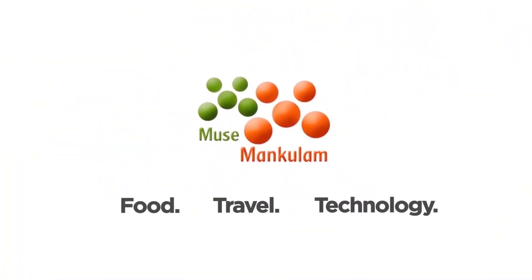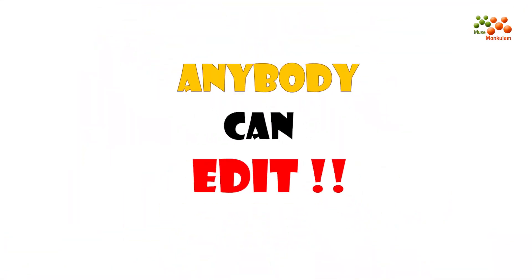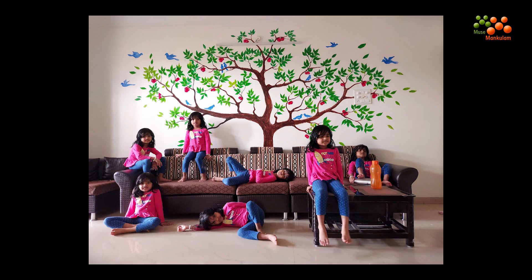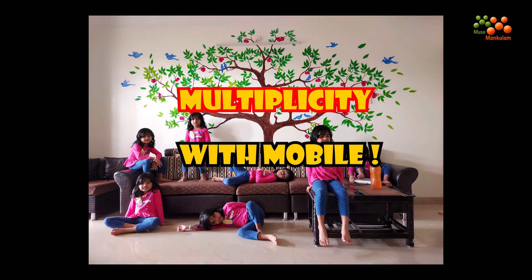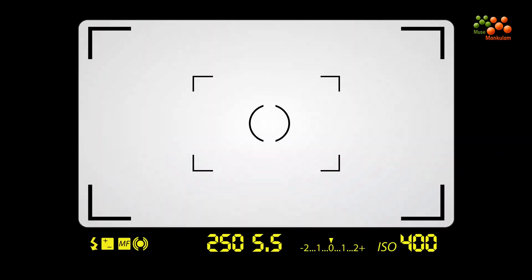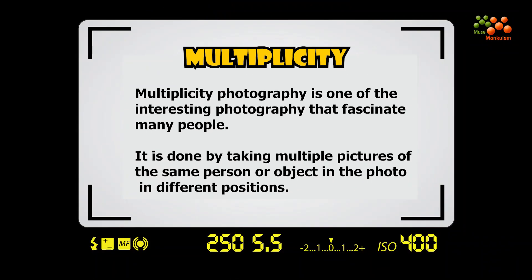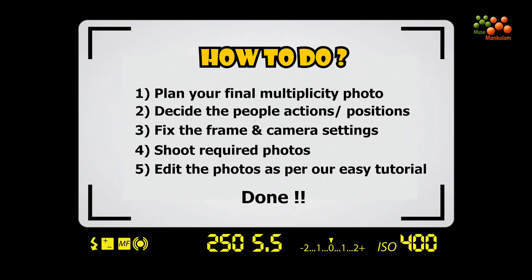Hello everyone, welcome back to Muse Bungalow. In today's 'Anybody Can Edit' episode, we are going to discuss a creative photography technique called multiplicity. Multiplicity photography can be done with mobile. Multiplicity is taking multiple pictures of the same person or object in a photo with different positions.